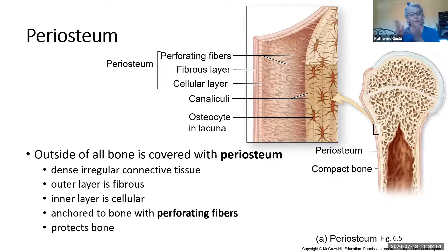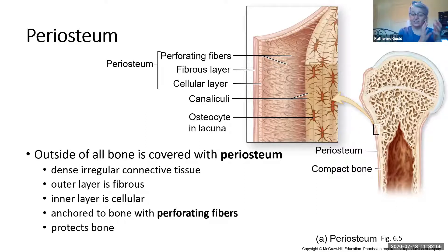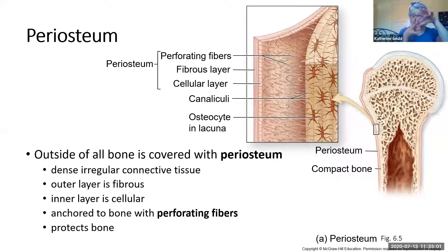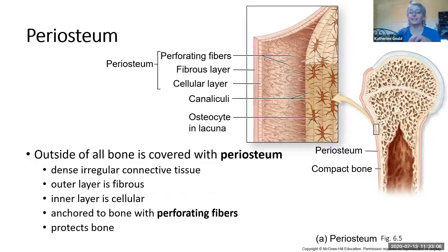Periosteum goes around the bone, and it's around all bone. In the skull, this becomes part of the dura mater that protects the brain from the bone itself. So it kind of has a dual purpose: protecting the bone and protecting the brain. In the rest of the body, it's just going to protect the bone from trauma from the outside.